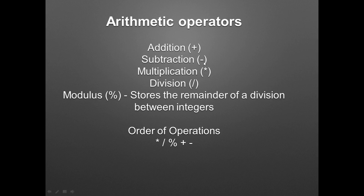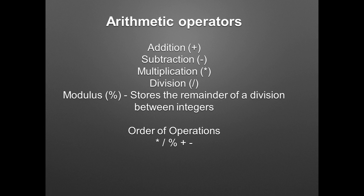We have addition, which is the plus; subtraction, which is the minus or hyphen; multiplication is the asterisk, which is the number 8 key; division is the forward-leaning slash, which is where the question mark is on the keyboard. And a newcomer here — you've probably never seen this before — is called the modulus, and it uses a percent symbol. Whereas division stores how many times one number goes into another, how many times it divides evenly, the modulus tracks the remainder of that — what number was left over.